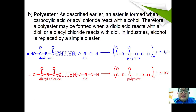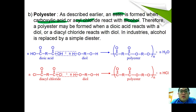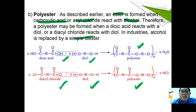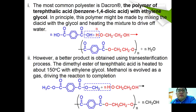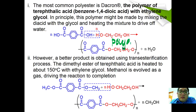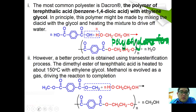For polyester: an ester is formed when a carboxylic acid or acyl chloride reacts with an alcohol. Therefore, a polyester may be formed from dioic acid with diol, or diacyl chloride with diol. In industry, a simple diester is used with dioic acid and diol to form polyester, or diacyl chloride with diol. The most common polyester is Dacron, the polymer of terephthalic acid with ethylene glycol, with the chemical name polyethylene terephthalate (PET).